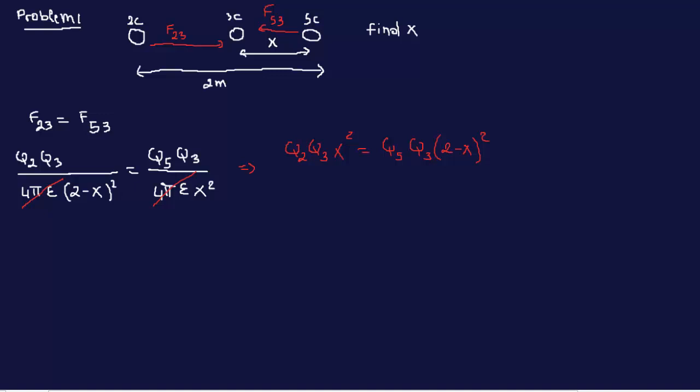From here, it's just basic math. We replace the values. The charge on 2, Q2 is basically 2 coulombs. Q3 is 3, x squared equals 5 times 3 times 2 minus x squared.